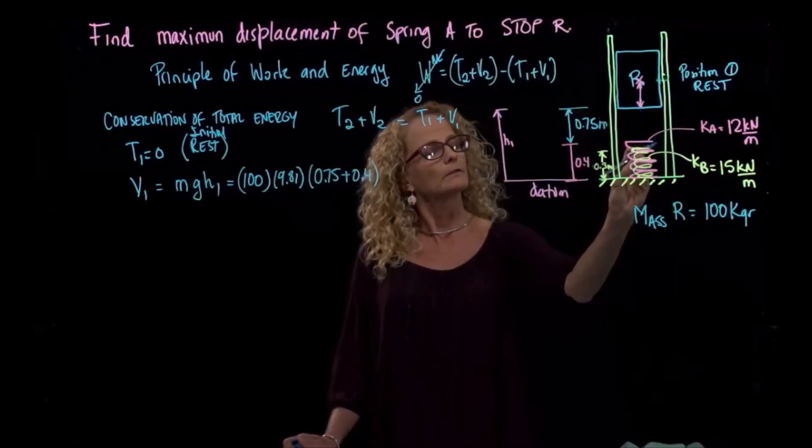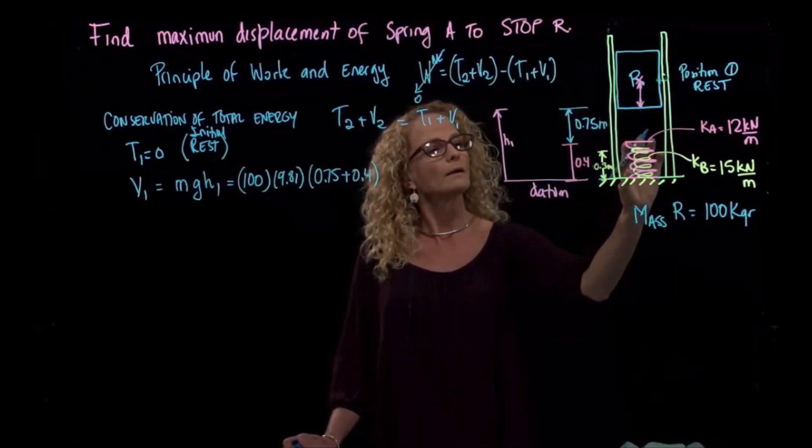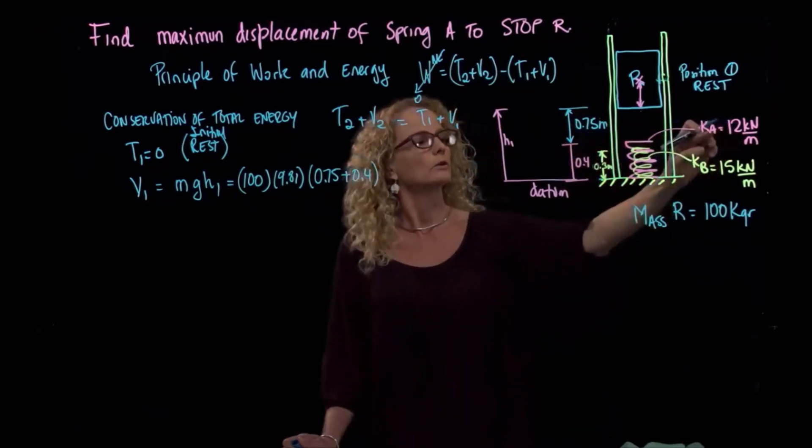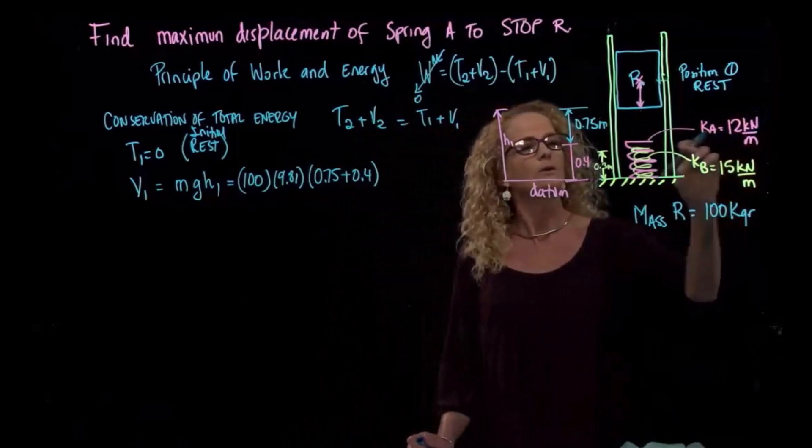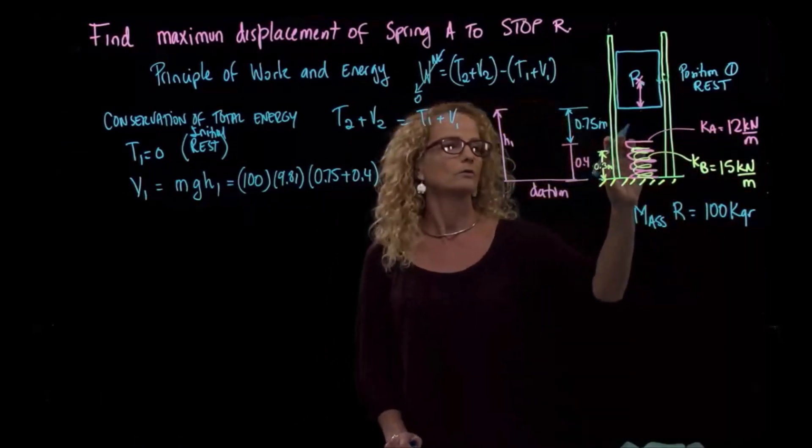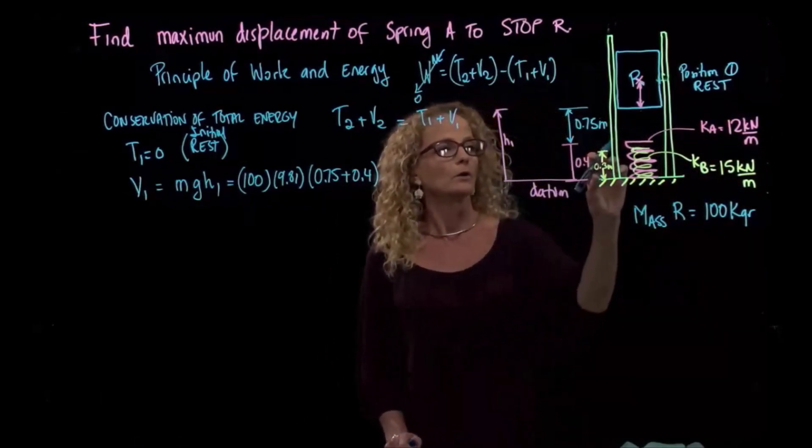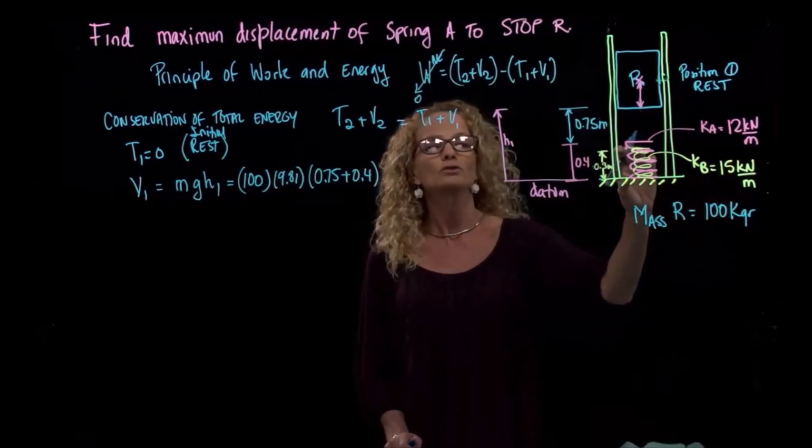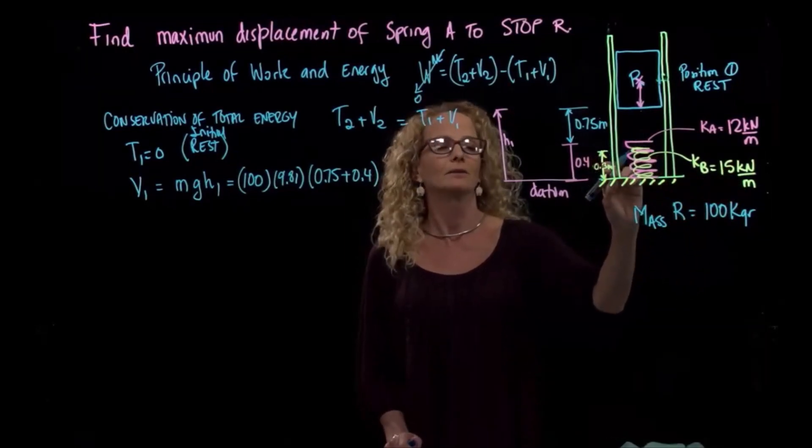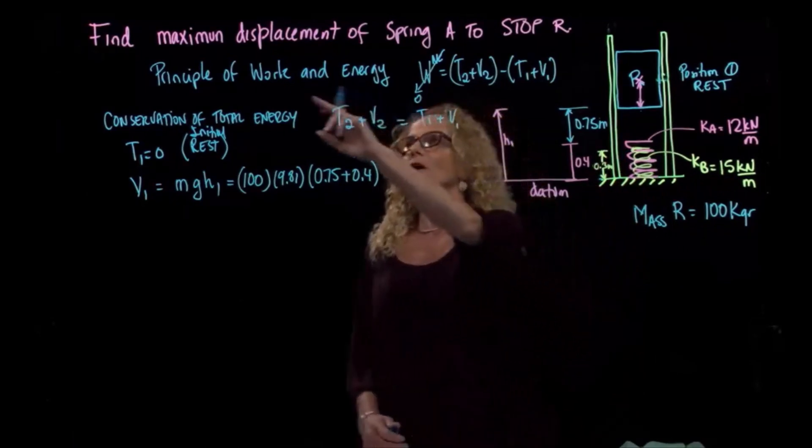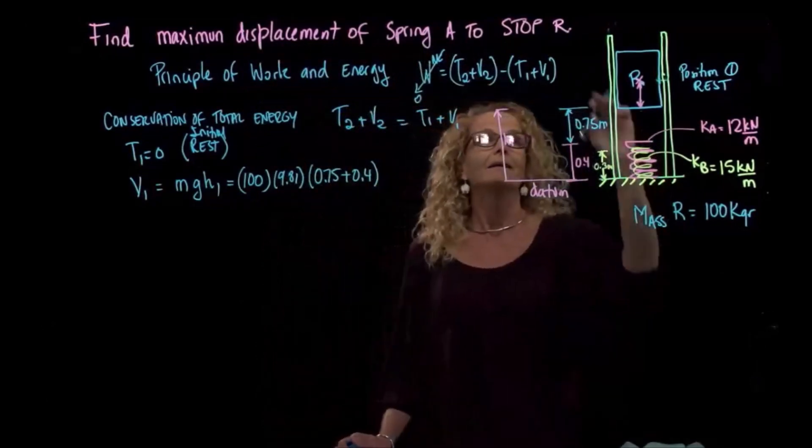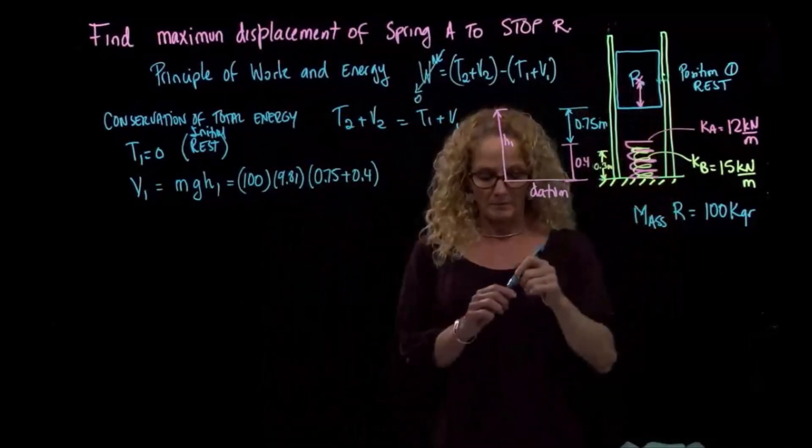Here, the system has two springs. One, which is spring A, which is a constant of 12 kilonewtons over meters, has an unstretched length of 0.4. Then we have another spring, which is 15 kilonewtons over meters, which has an unstretched length of 0.3. They are asking us to find the maximum displacement of spring A to stop our block.